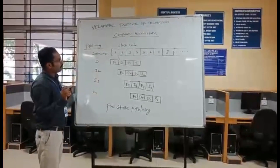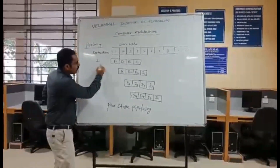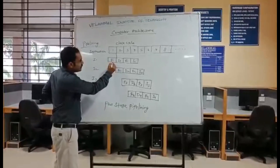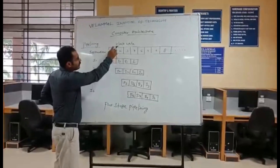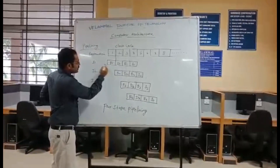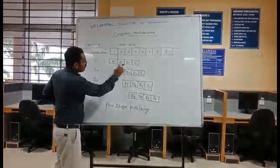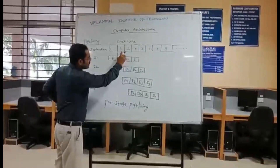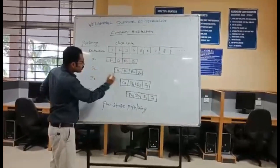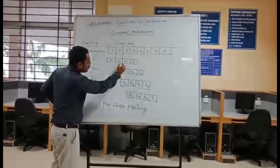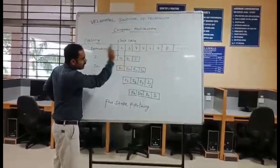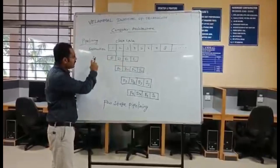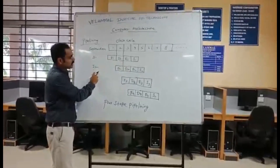Instruction 1 is fetching in clock cycle 1. When Instruction 1 is decoding in clock cycle 2, it is taking one clock cycle. Parallelly, Instruction 2 is also fetching. So totally it is taking one clock cycle, but parallel operation is happening in Instruction 1 and Instruction 2.